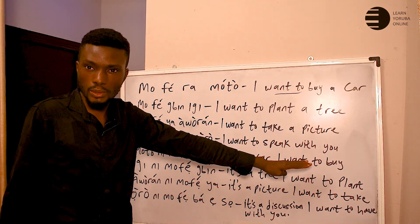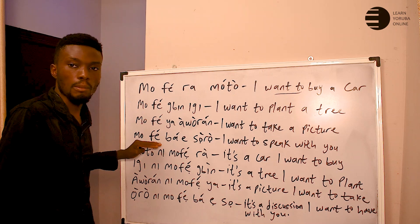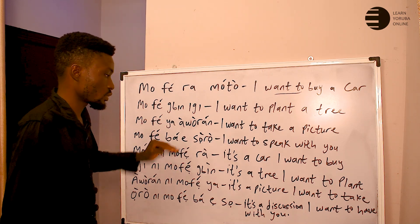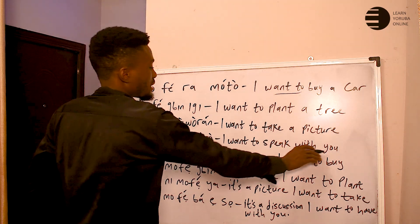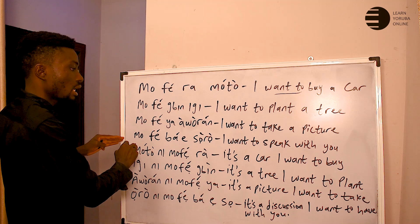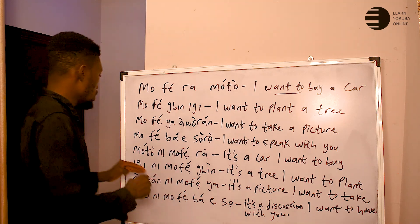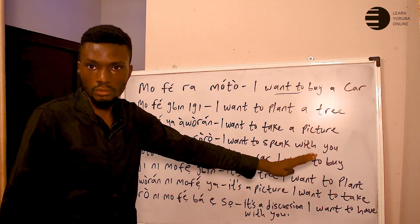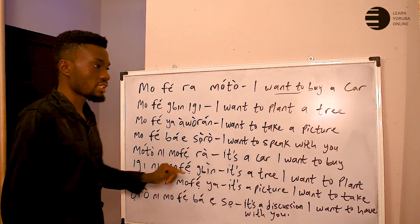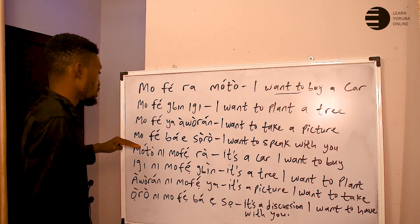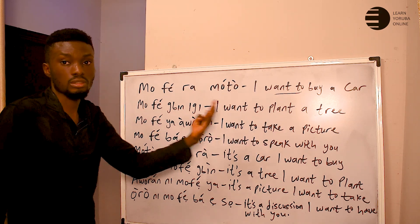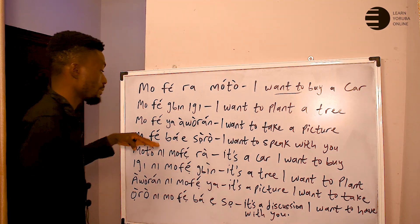'Mofe ba e sọrọ' means 'I want to speak with you.' If it is 'I want to speak with him,' it will be 'mofe ba a sọrọ.' If it is 'I want to speak with them,' it will be 'mofe ba wọn sọrọ.' If it is 'I want to speak with you' (plural), it will be 'mofe ba yin sọrọ' or 'mofe ba e sọrọ' — whichever form applies.